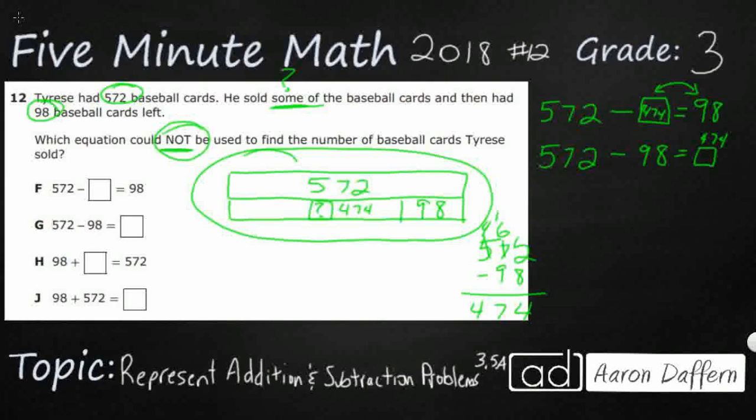We know that we have two subtraction problems. Tied to subtraction is addition, so we can now have two addition problems. And when we have two addition problems, your largest number always becomes the sum because you're adding up to that number. In subtraction it always comes first. When we're looking at addition, it always comes at the end or as the sum.